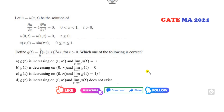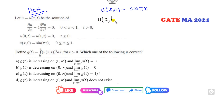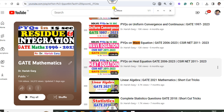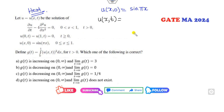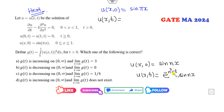I will explain all the questions with the help of shortcut tricks. The first question is a heat equation, and the initial condition solution is given as sine of pi x. The shortcut trick: whenever you have a solution in the form of sine(nx), the solution will be e raised to power minus n² c t times sine(nx). Here n is pi, and c is 4, so it is e raised to power minus 4 pi² t times sine(pi x).